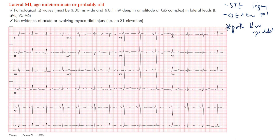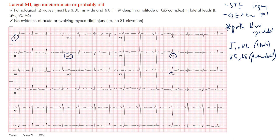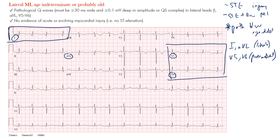Because it's a lateral MI, we're looking in the lateral leads. The lateral leads are I and AVL of the limb leads, and then V5 and V6 of the precordial leads. On the standard 12-lead EKG, here's lead I, here's lead AVL, here's lead V5 and V6. You're looking here, and also here to localize it. Those are the lateral leads.